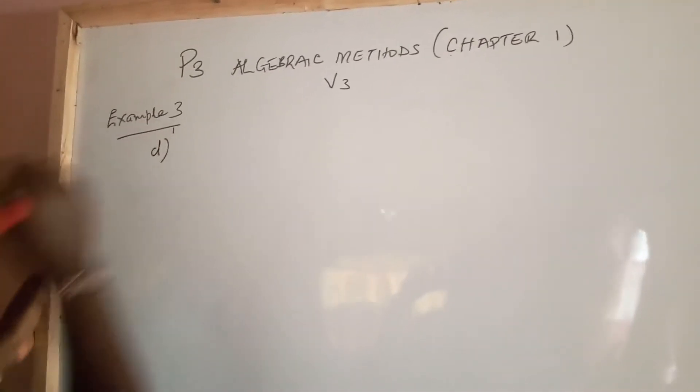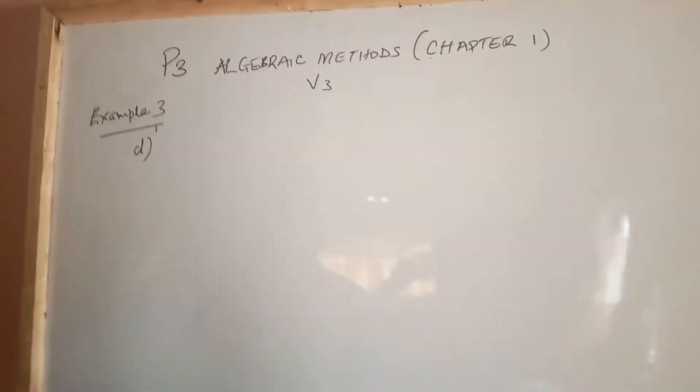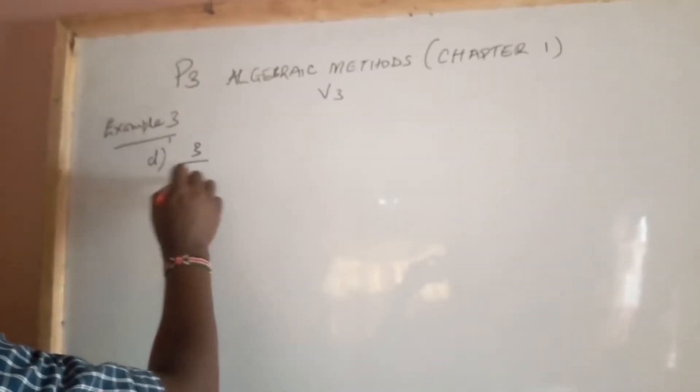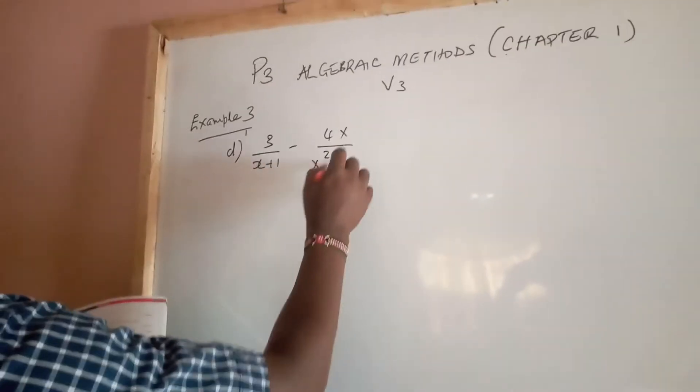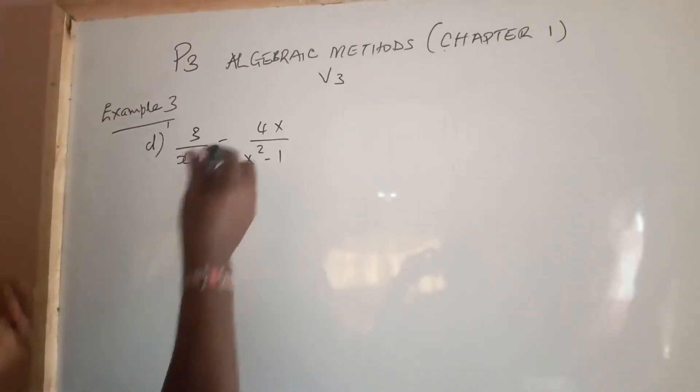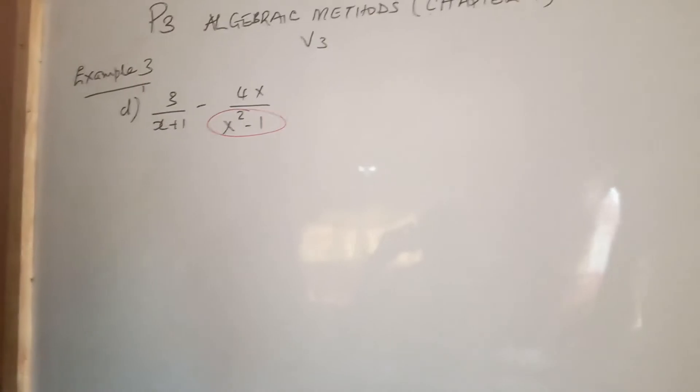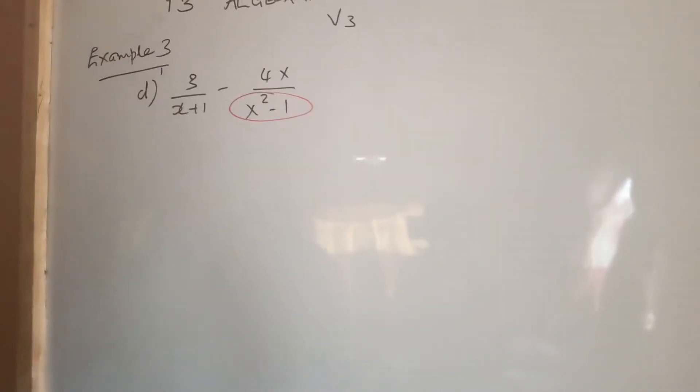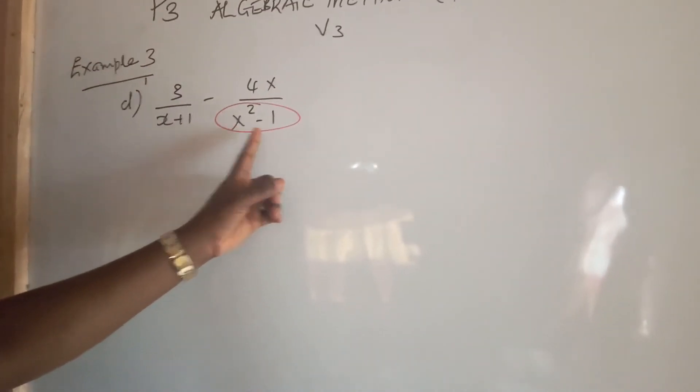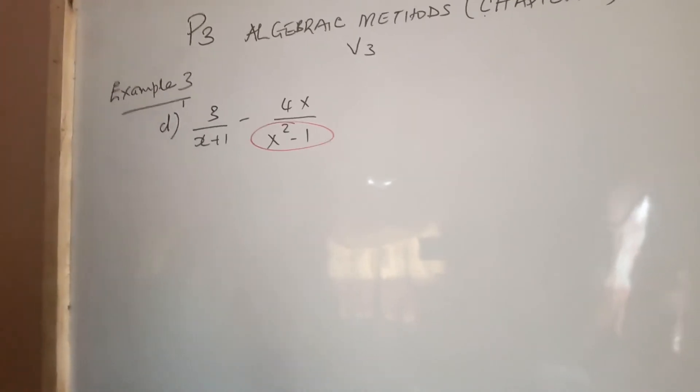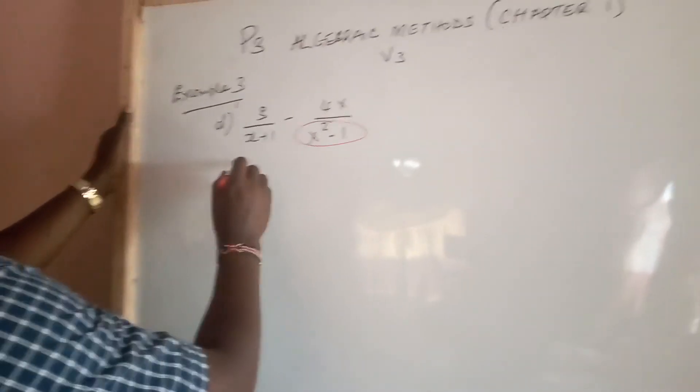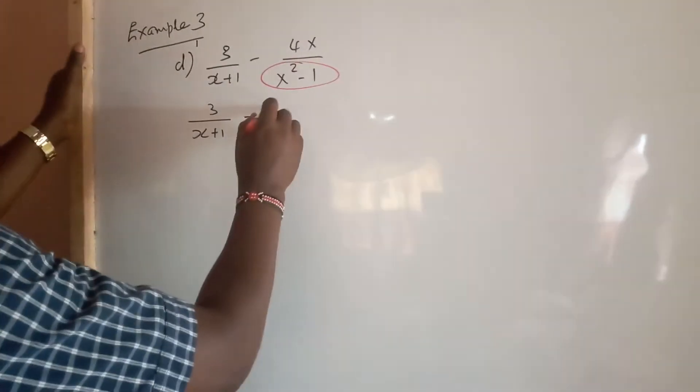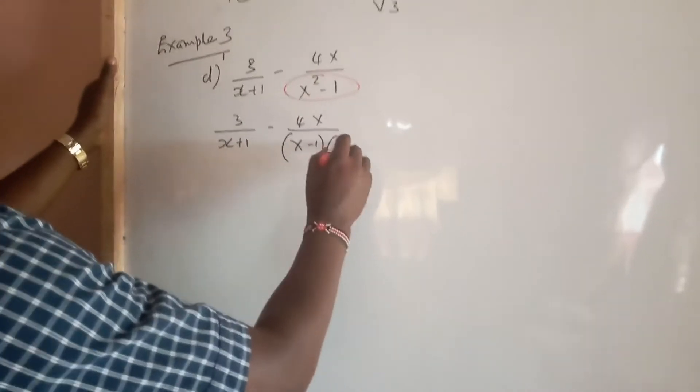Let us look closely at part D, which is a bit different. Part D talks of 3 over (x+1) minus 4x all over (x²-1). There's something interesting in this denominator. We have the difference between two squares, because we have a perfect square root of x² and a perfect square root of 1. Before we go any further, we can rewrite the whole expression respecting the difference between two squares: 3 over (x+1) minus 4x over (x-1)(x+1).